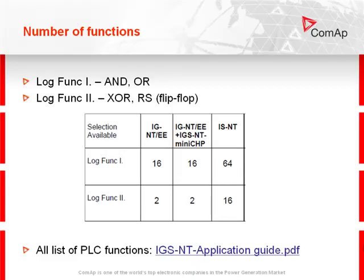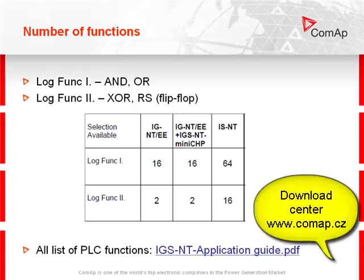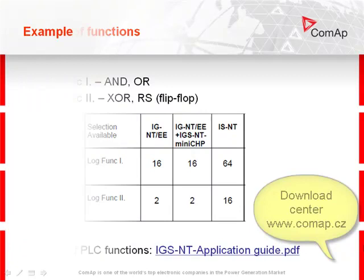Regarding the number of functions: in COMAP controllers there are 2 logical function blocks — logical function 1 and logical function 2. In this table you can see how many logical functions are available in each COMAP controller. All details about PLC functions can be found in the IGS-NT application guide, which you can download from the COMAP website.